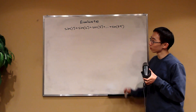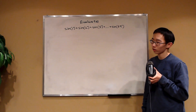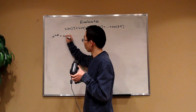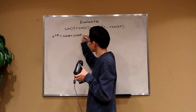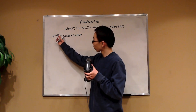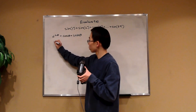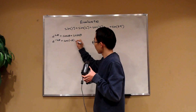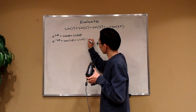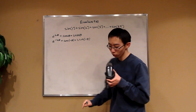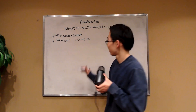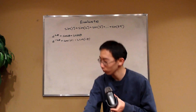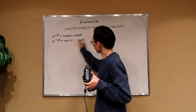How do we relate sine to some sort of complex expression? You might recall Euler's formula: e to the i theta is equal to cosine theta plus i sine theta. From this, we can plug in negative theta, so e to the negative i theta equals cosine of negative theta plus i sine of negative theta. But cosine is an even function, so cosine of negative theta is just cosine of theta. And sine is an odd function, so that becomes minus i sine theta.